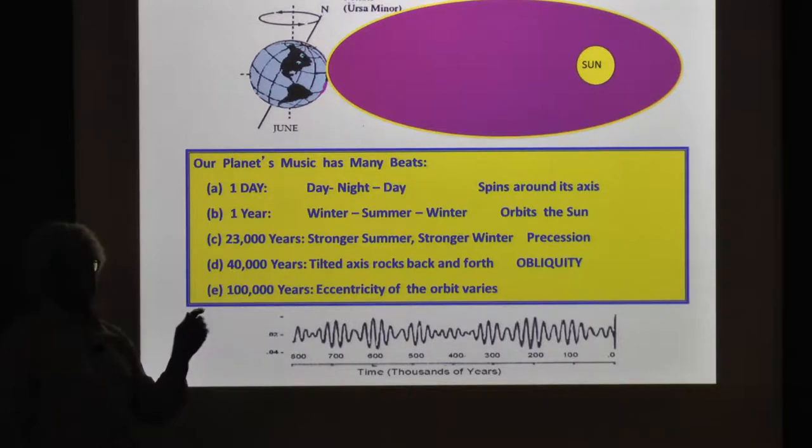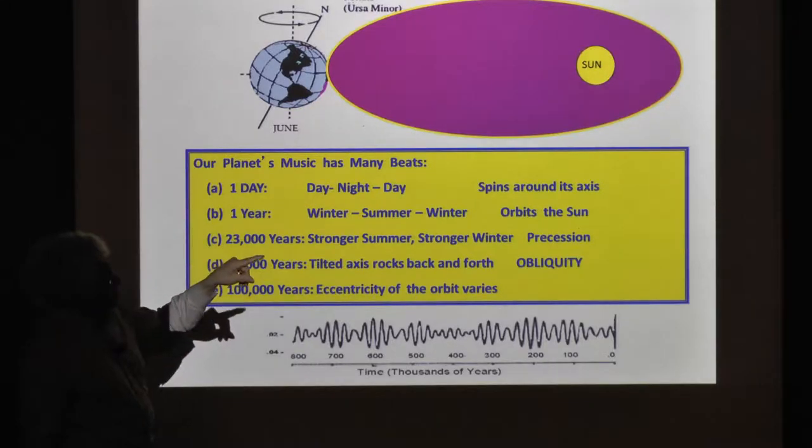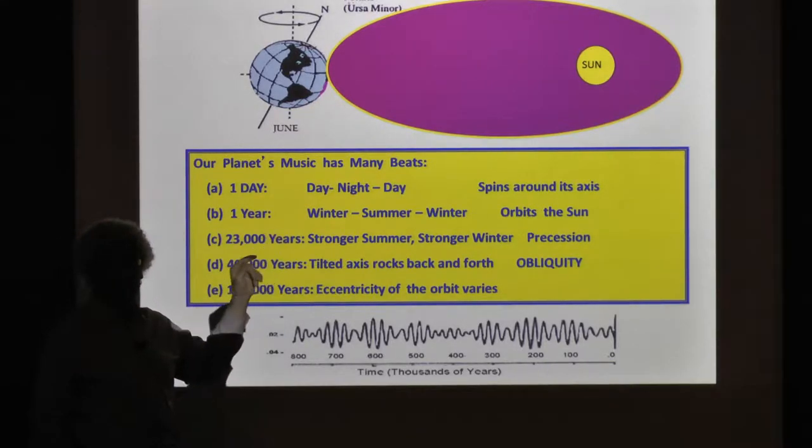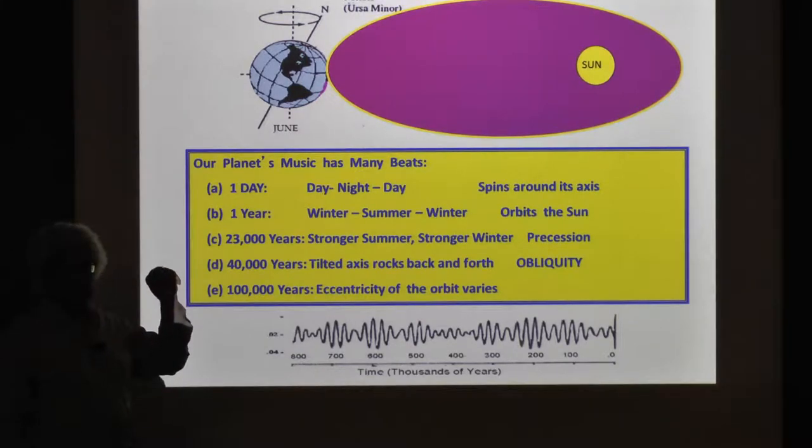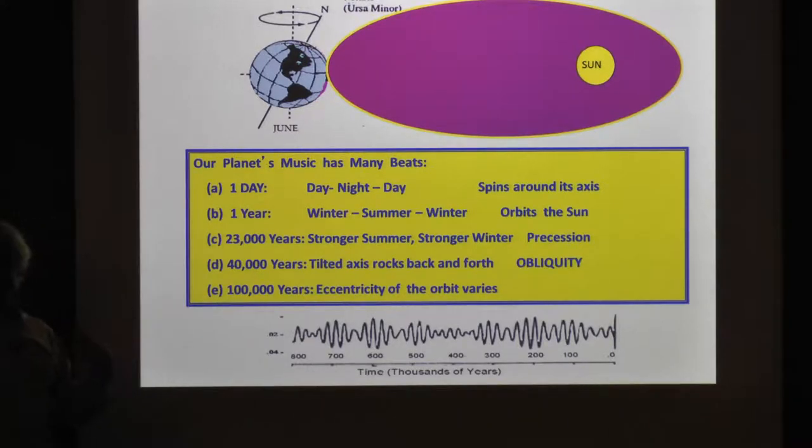If I change precession—if I'm closer to the Sun some other time of the year—all I've done is redistribute sunlight in time. Precession means I've made some winters warmer, others colder. These two components have entirely different physical structures, both in time and space.